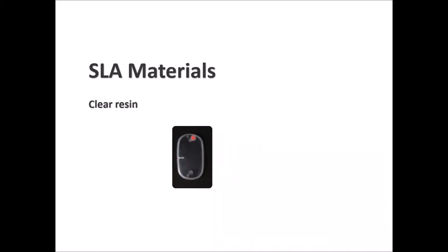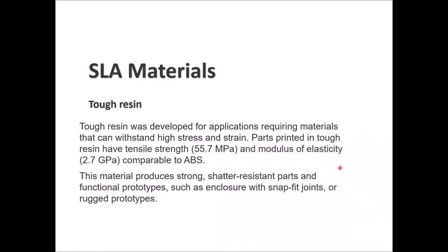An example of a clear resin application is an enclosure that will be clear to a good acceptable level. We also have tough resin, which is developed for applications that need materials able to withstand high stress and strain. If you print a part with tough resin, it will have a tensile strength of 55.7 MPa and a modulus of elasticity of almost 2.7 GPa.